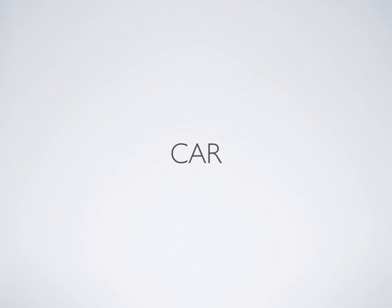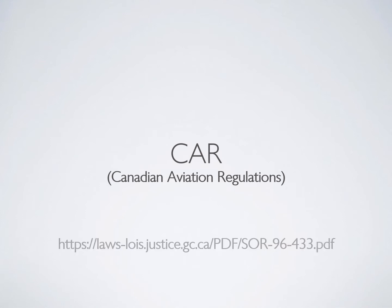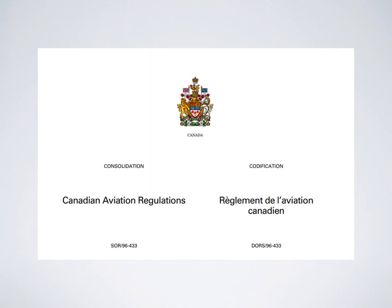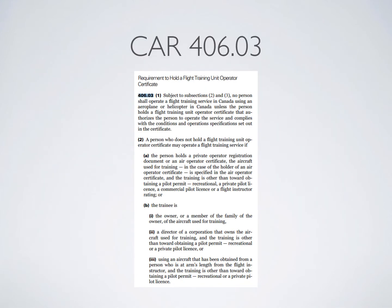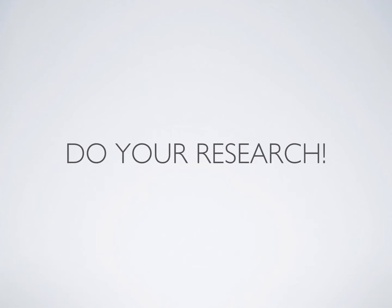The first place we have to start is the CARs — the Canadian Aviation Regulations. It's the set of laws that govern aviation in Canada, and you're going to have to get very familiar with them. They are available for free online. There's a law that says if it's your first license — usually your private pilot license — you have to go to what's called an FTU, or flight training unit, which is a regulated flight school. That's the only way to get your PPL unless you are the owner of an aircraft.